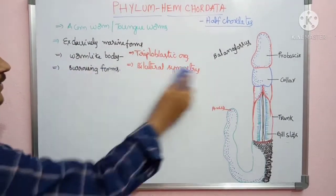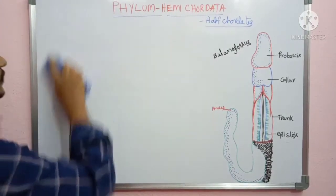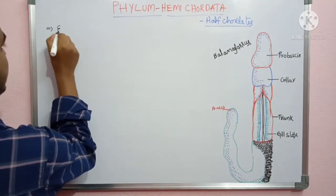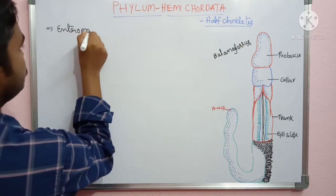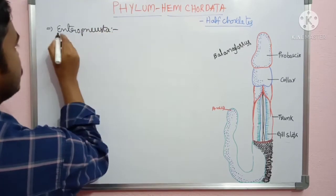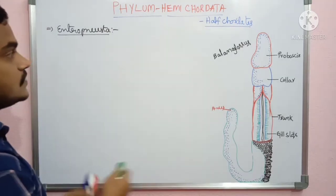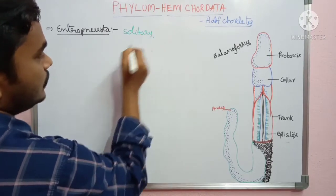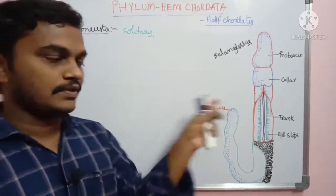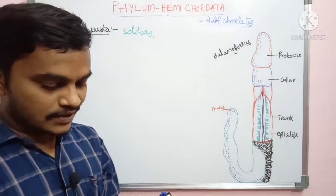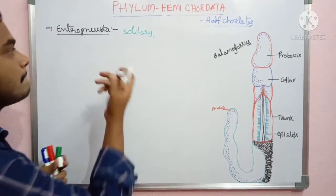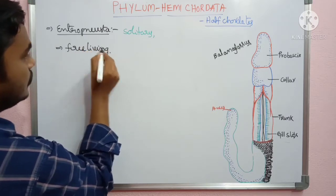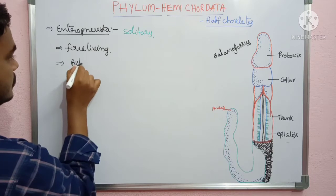Class 1 is Enteropneusta. Entero means intestinal region and pneusta means breathing. These are solitary forms — they live as single individuals and are free living. They can move freely. The body is divided into the same three parts: proboscis, collar, and trunk.